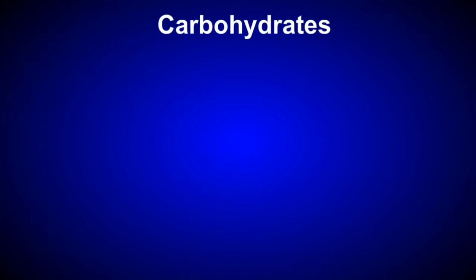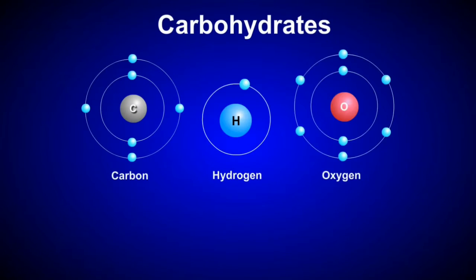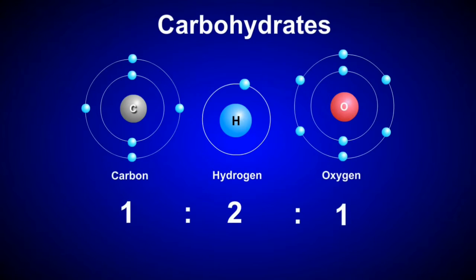Carbohydrates are biomolecules that are composed of carbon, hydrogen, and oxygen atoms in the ratio of 1 to 2 to 1. We can represent the proportion of these elements within carbohydrate molecules with the formula CH₂O.